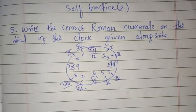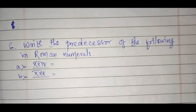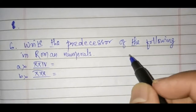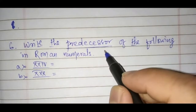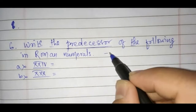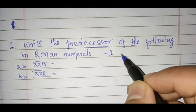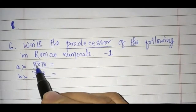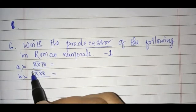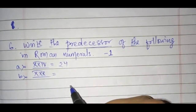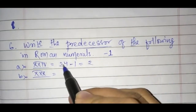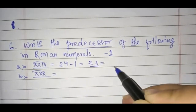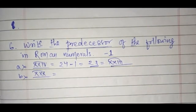Don't get confused. Let's proceed to question number 6. The question states: find the predecessor of the following in Roman numeral form. You all know what predecessor means — from chapter 1, predecessor means you subtract 1 from the given number, that is 1 less than the given number. Suppose you convert this Roman numeral into Hindu-Arabic form: you write it as 24. So the predecessor of 24 is 24 minus 1, which is 23. You write 23 in Roman numeral form as XXIII.